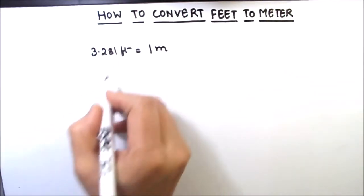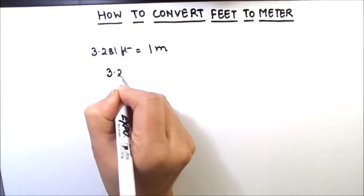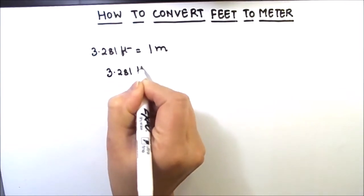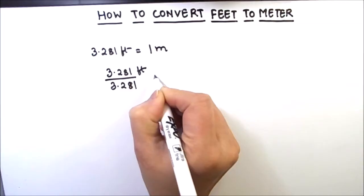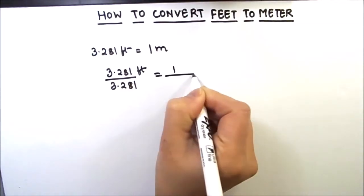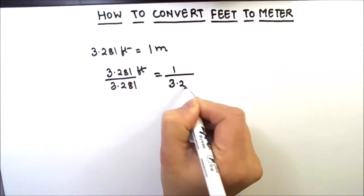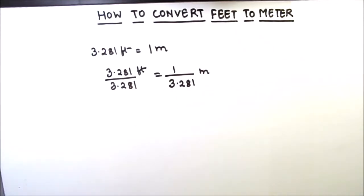So 3.281 feet divided by 3.281 is equal to 1 divided by 3.281 meters.